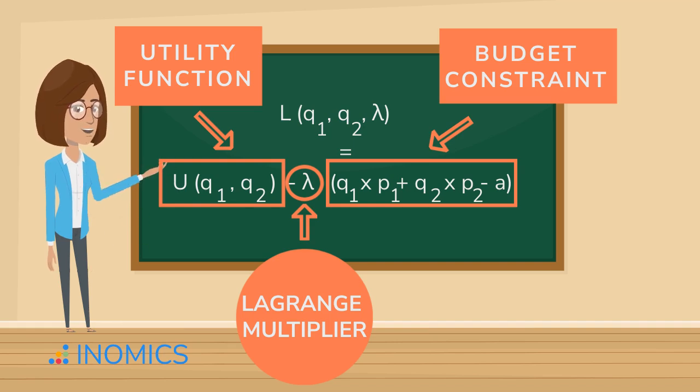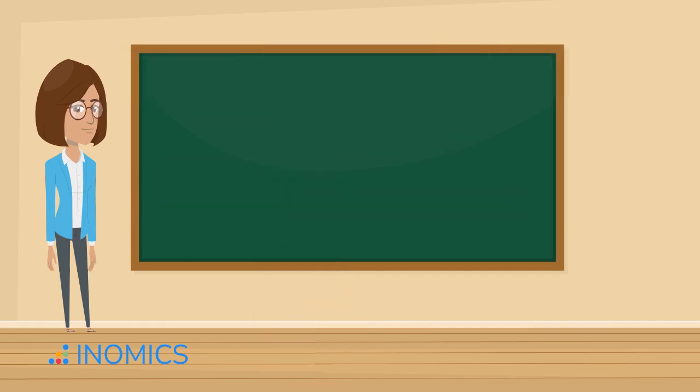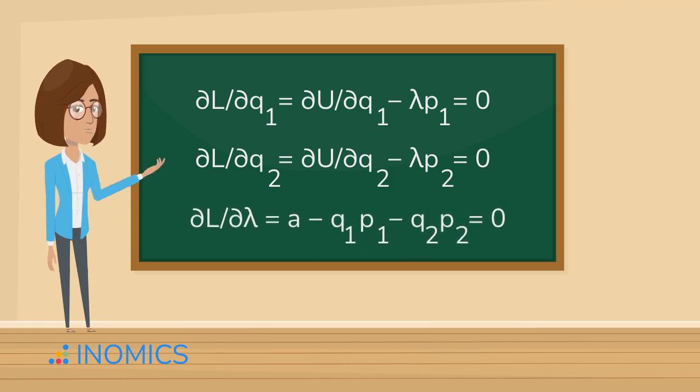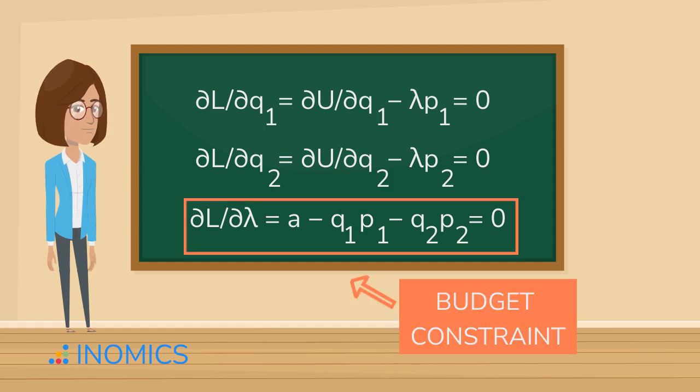We do this by taking partial derivatives of the Lagrangian with respect to each variable and setting them equal to zero. Partial L divided by partial Q1 equals partial U divided by partial Q1 minus lambda P1 equals zero. Partial L divided by partial Q2 equals partial U divided by partial Q2 minus lambda P2 equals zero. Partial L divided by partial lambda equals A minus Q1 P1 minus Q2 P2 equals zero. This last equation? That's just our budget constraint again. Reassuring, right?